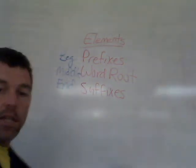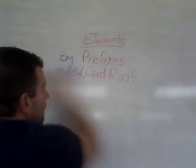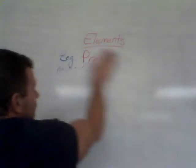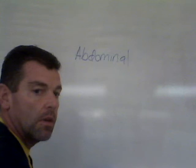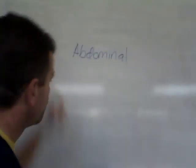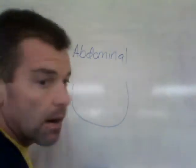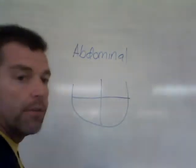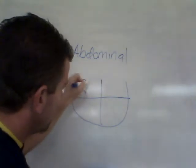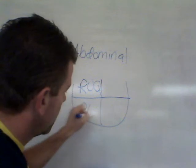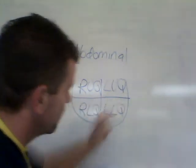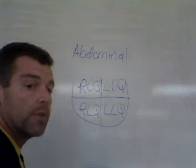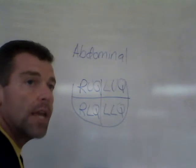Let's take a term like 'abdominal.' The abdominal region is divided into four quadrants: the right upper quadrant, the right lower quadrant, the left upper quadrant, and the left lower quadrant. These quadrants allow us to identify the organs of digestion located in that particular area.